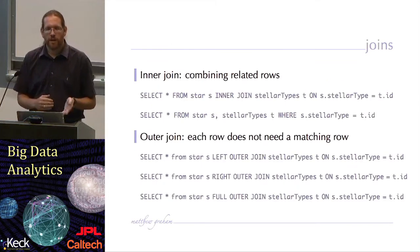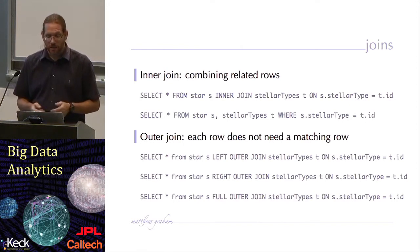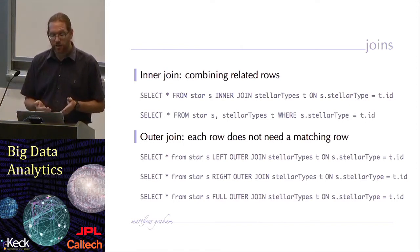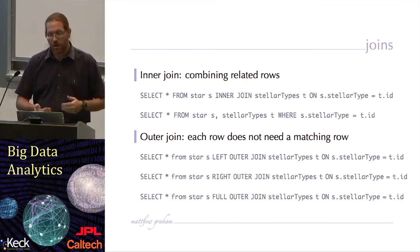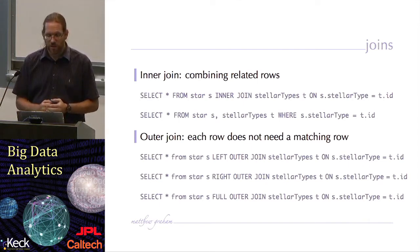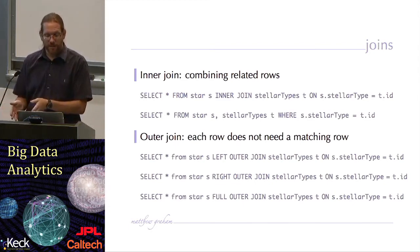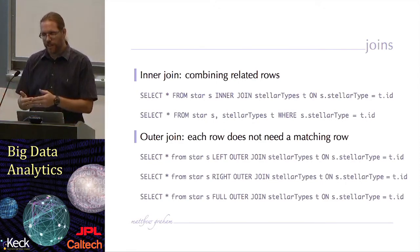It may be that you have information in two different tables and you want to construct a query across those tables. That is what's known as a join. There are a number of types of joins. You have inner joins, which combine related rows, and you have outer joins, where the rows do not need a matching row between the two tables. The first inner join example will return all the information from a table star joined with a table called stellar types, and then you give it a constraint to specify the nature of the join.